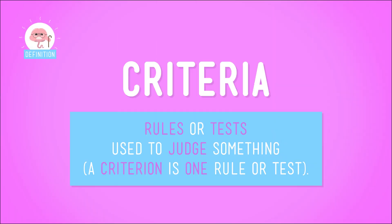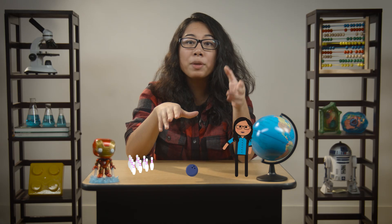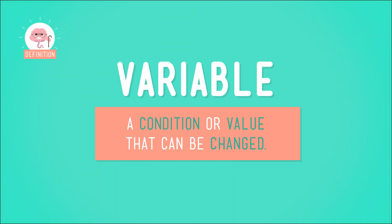Let's recap all of the things we've gone over in the last few episodes. Even though our fabulous feats of engineering solved lots of different kinds of problems, they all had some things in common. For each problem, we decided on the criteria for a successful solution — the rules we used to judge whether our solution worked or not. In the bowling alley, our criteria were getting all of the pins down and getting them all down in one turn. We also identified variables, those conditions that could be changed over the course of the experiment.